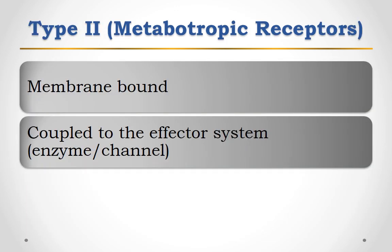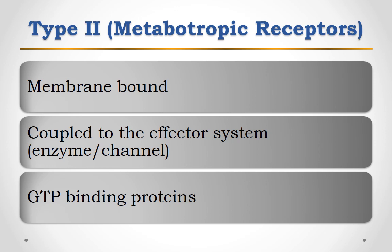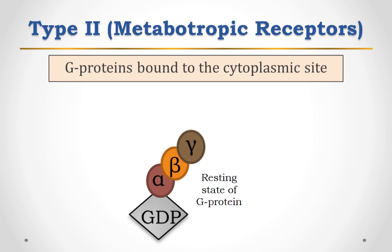Metabotropic receptors are membrane-bound receptors which are coupled to the effector system like enzymes or channels through GTP binding proteins called G proteins. There are many examples of such types of receptors like muscarinic cholinergic receptors, adrenoceptors, dopaminergic receptors, serotonin receptors, and many more. G proteins are bound to the inner, that is, cytoplasmic face of the plasma membrane.